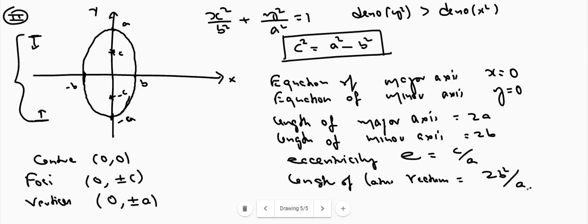If we are given an ellipse, we have to compare it with one of these two types. Then we can find the center, vertex, foci, equation of major axis, minor axis, their lengths, length of latus rectum, eccentricity, etc. We will discuss some problems in our next module. Okay students, thank you.